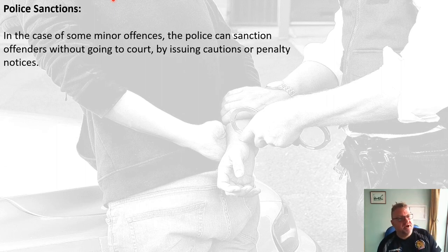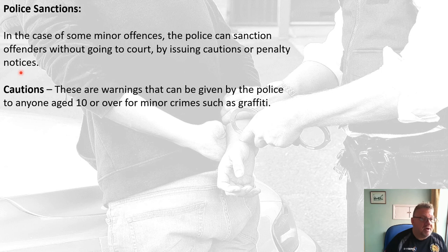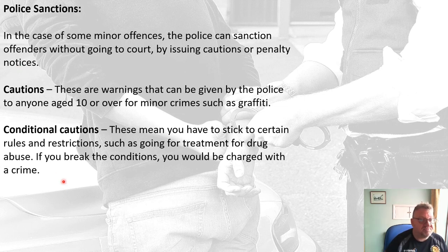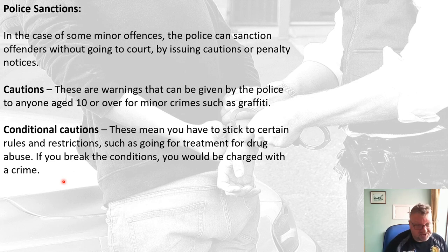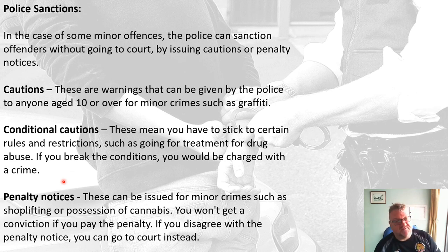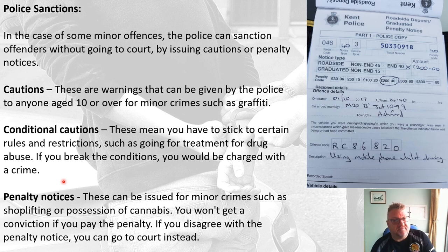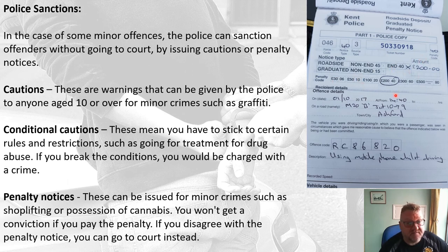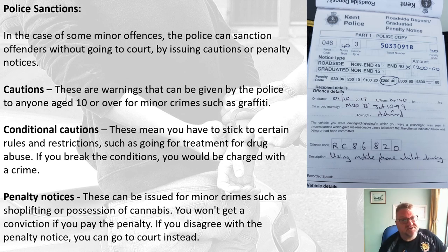The police can also issue formal sanctions in some minor offences. They can issue cautions or penalty notices. Cautions are warnings given by the police to anyone aged 10 or over for minor crimes such as graffiti. You can have conditional cautions which means you have to stick to certain rules and restrictions such as going for drug treatment. If you break the conditions you get charged. Or there are penalty notices — for example, a person can be given a £200 fine for using a mobile phone whilst driving, which also comes with three points on their licence.